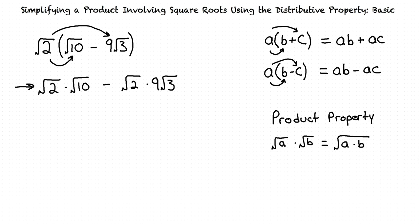Now the product property for square roots says that when we have the square root of a times the square root of b, it equals the square root of a times b. So for the square root of 2 times the square root of 10, we combine those terms, which results in the square root of 2 times 10, which equals the square root of 20.